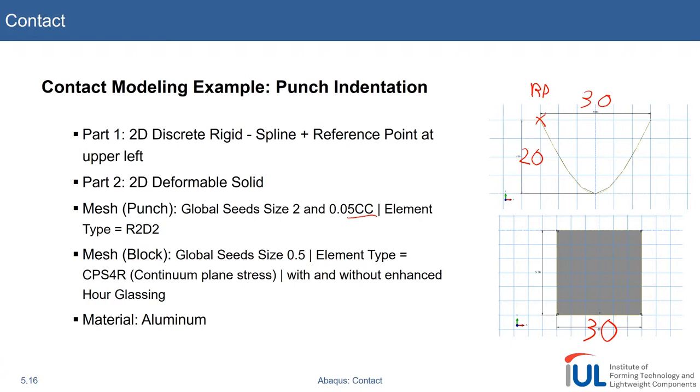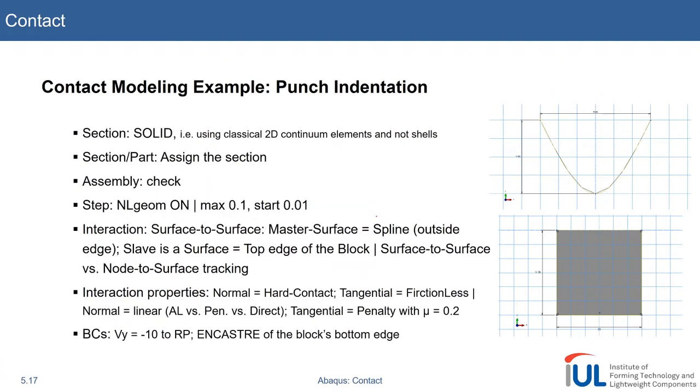We will use plane stress as a beginning with reduced integration, and we can also check with or without enhanced hourglass, and we talked about this in a previous episode. I hope that our aluminum will still be there in our material library. If you forgot the data, just take the material data from our last video.